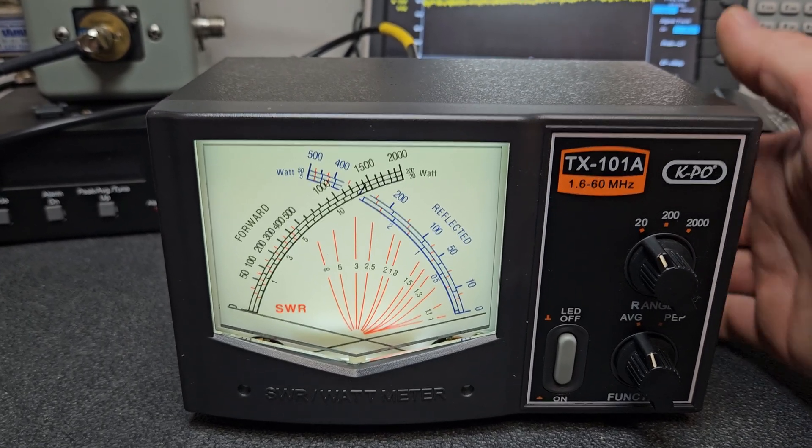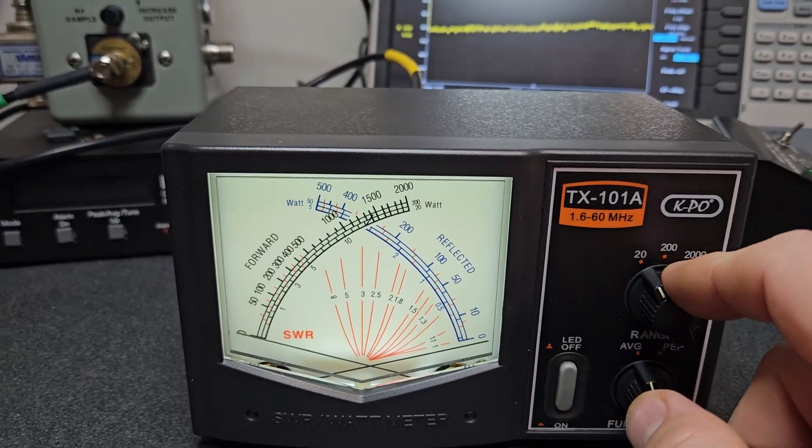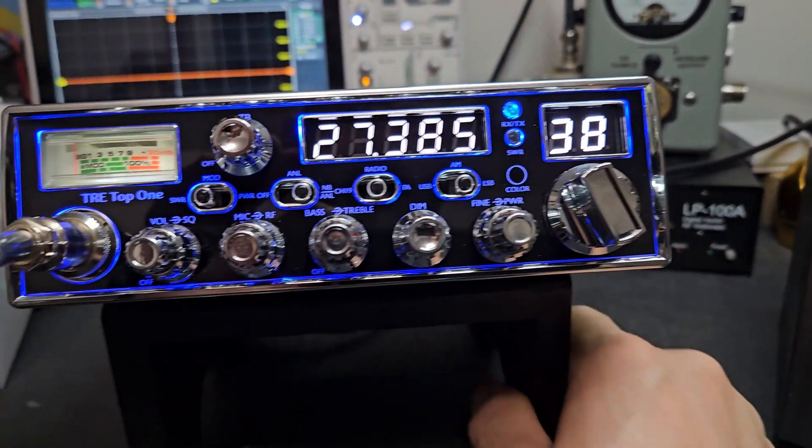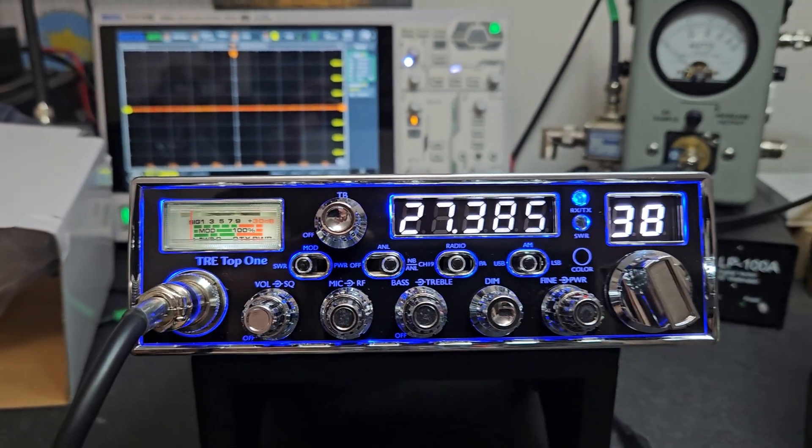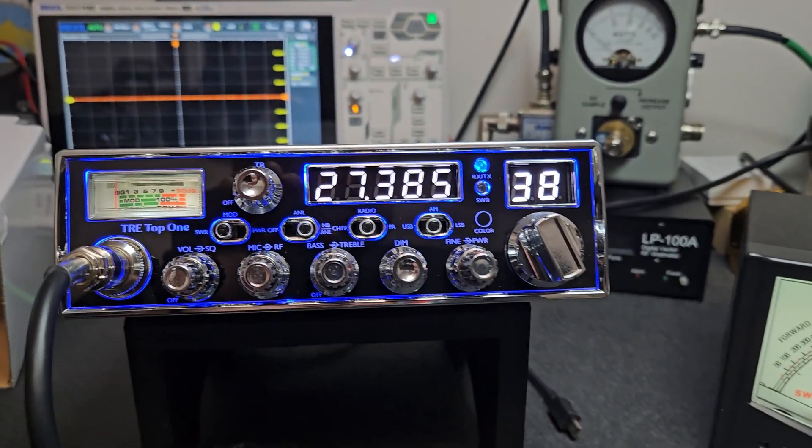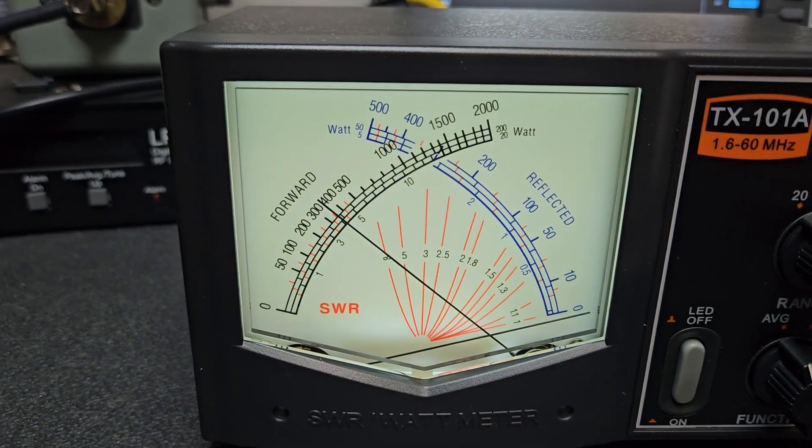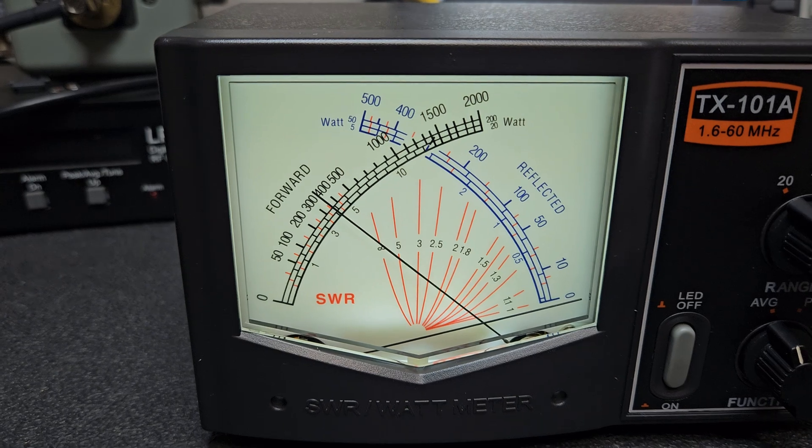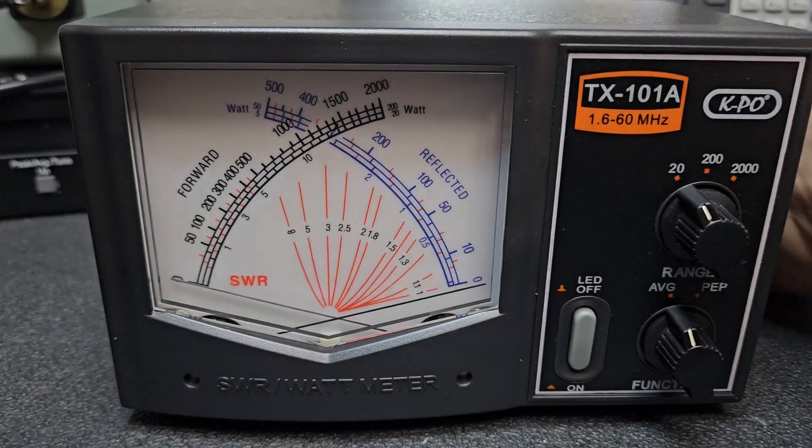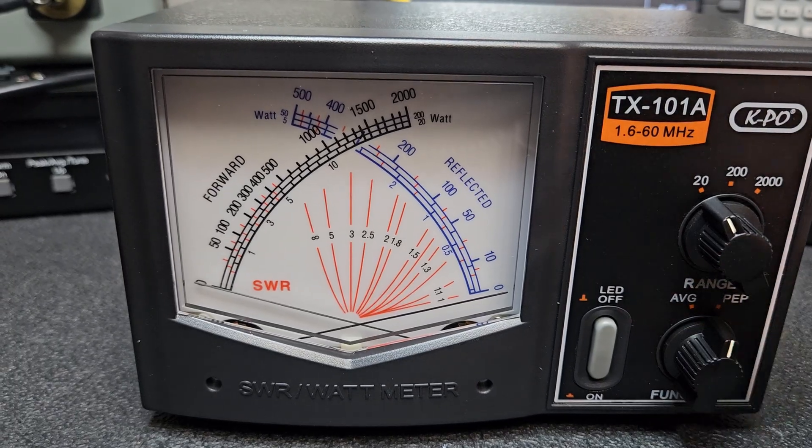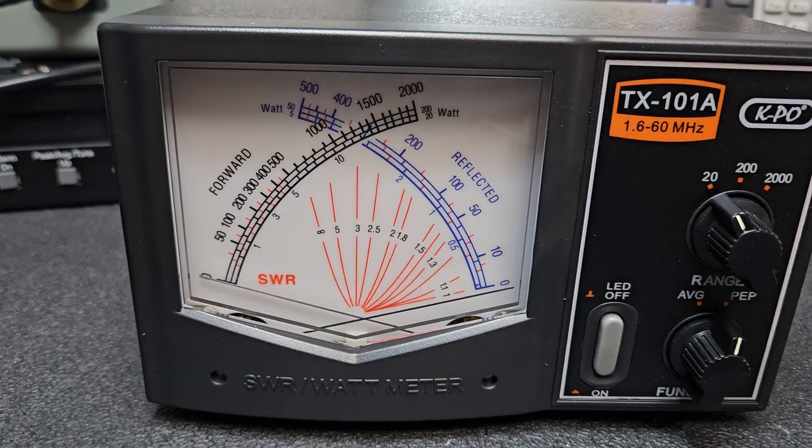Let's show the meter. I'm going to keep it in the average setting on 20 watts. I'm using this Texas Ranger top one here. We're going to put it in AM mode. We have about four watts and the meter says about four watts, so that's good.